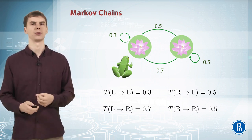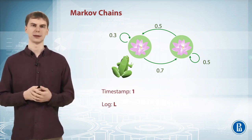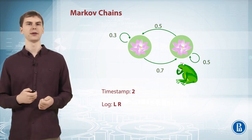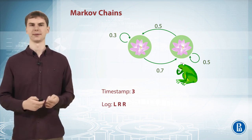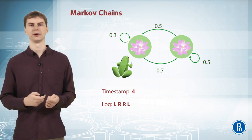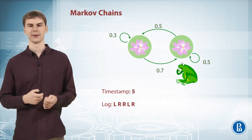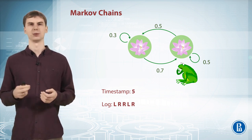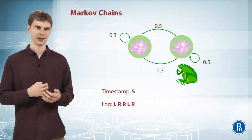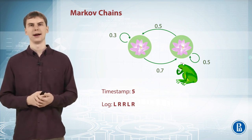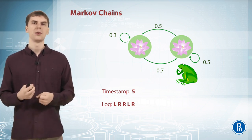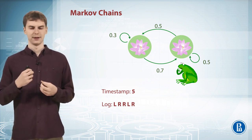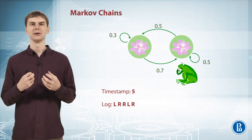We can simulate our dynamic system. For example, at time step 1 the frog was on the left, then maybe it jumped to the right at time step 2, then maybe it stayed on the right, then went to the left, then to the right. We can write down the path through state space that our dynamic system made — something like: left, right, right, left, right.